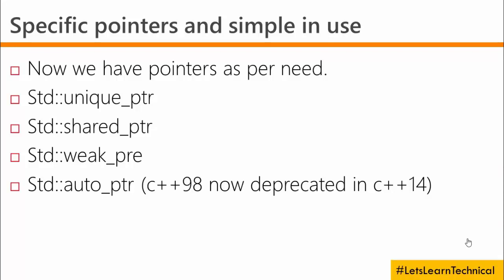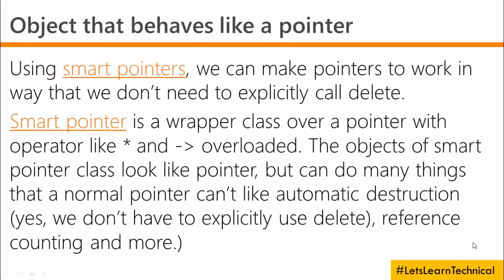Additionally, there is a fourth pointer called the auto pointer. It was part of C++98 and is now deprecated in C++14. We will cover each of these pointers in detail.